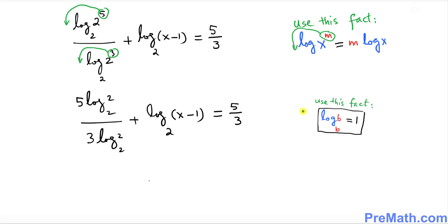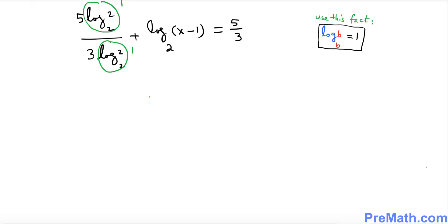Now we use the fact that if the argument and the base are the same number, the log equals 1. In our case both log_2(2) terms equal 1, so the expression becomes 5 times 1 divided by 3 times 1, plus log of (x minus 1) with base 2, equal to 5 over 3.